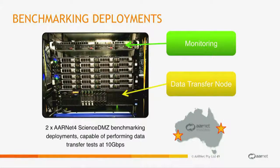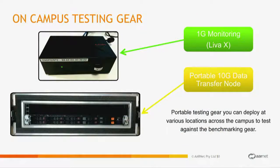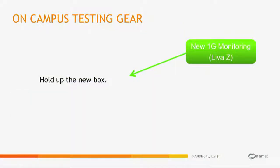For benchmarking, we've got servers on the backbone you can borrow — we have seven of them. Take them back to your institution to test against two known good hosts on the backbone, so you can actually see what your firewalls are doing. There are also new test boxes — Stephen Walsh's new little beasties with two 10 gig NICs — they're awesome.